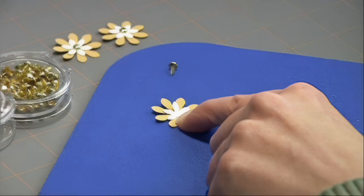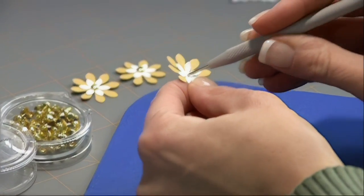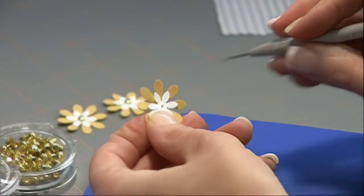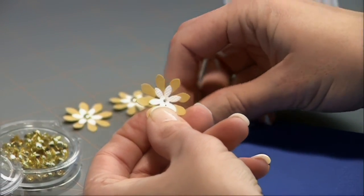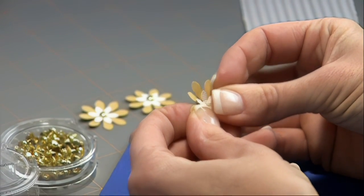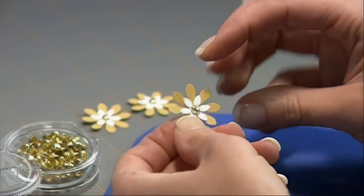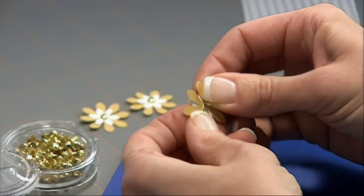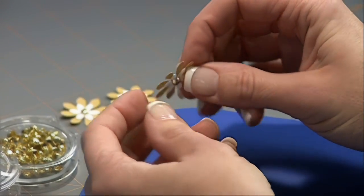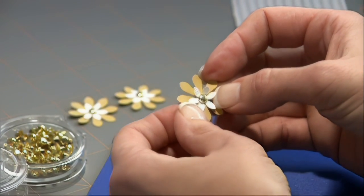Layering the small daisy on top of the large yellow daisy we're going to take an awl and push a hole through both daisies. Now we will take a gold brad and push it through from front to back. This becomes the center of our daisy and holds the two of them together. Flip it over and separate the prongs on the back. For a lifelike look try bending some of your petals up.